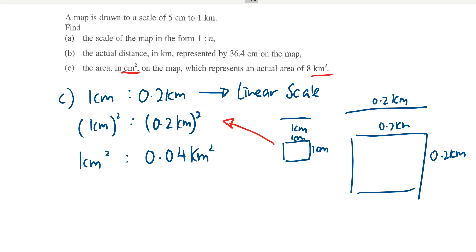If you want to do area questions, you're going to find out what is the scale for area first. Question is asking that you have an actual area of 8 km square. Actual means on the right side I will write 8 km square.